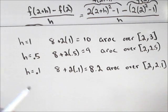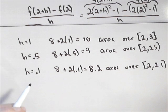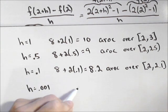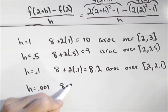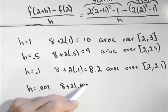And we can keep going with this. We can make our interval any size, and this will give us the average rate of change. What you can probably tell is, as this gets smaller, if we made h be 0.001, we'd get 8 plus 2 times 0.001,